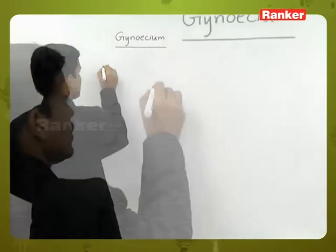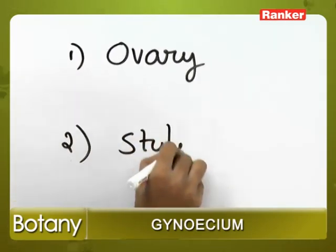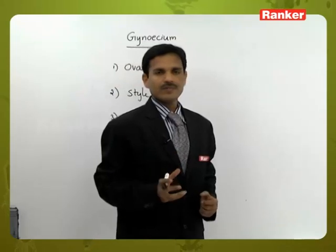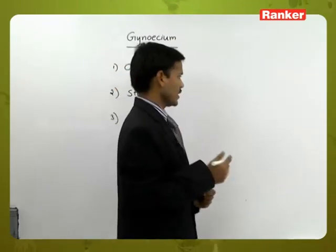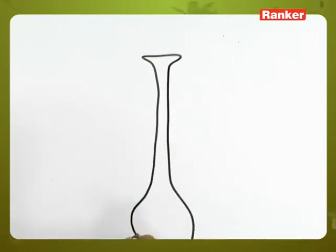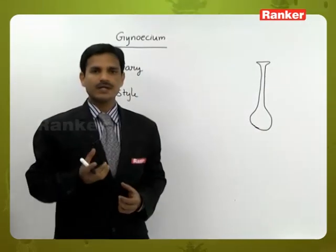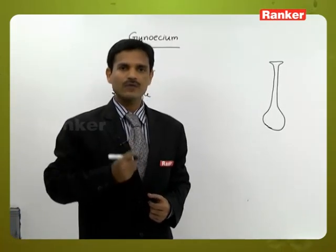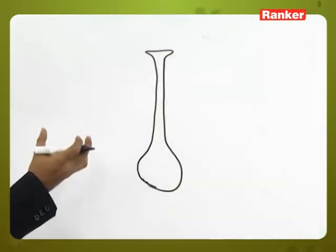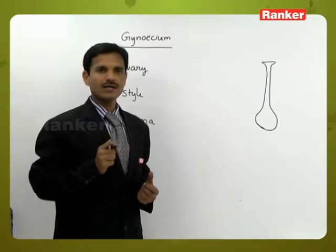The three parts of Gynoecium are: ovary, style, and stigma. The basal swollen part of the Gynoecium is called the ovary. The ovary bears the ovules — sometimes only one ovule is present, sometimes a number of ovules are present. The ovules are arranged on the placenta inside the ovary.